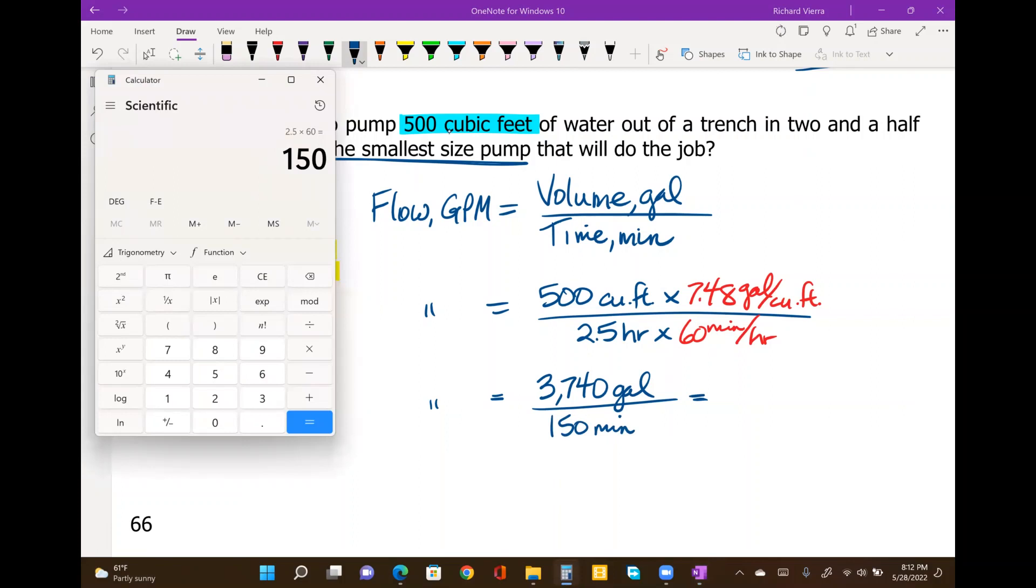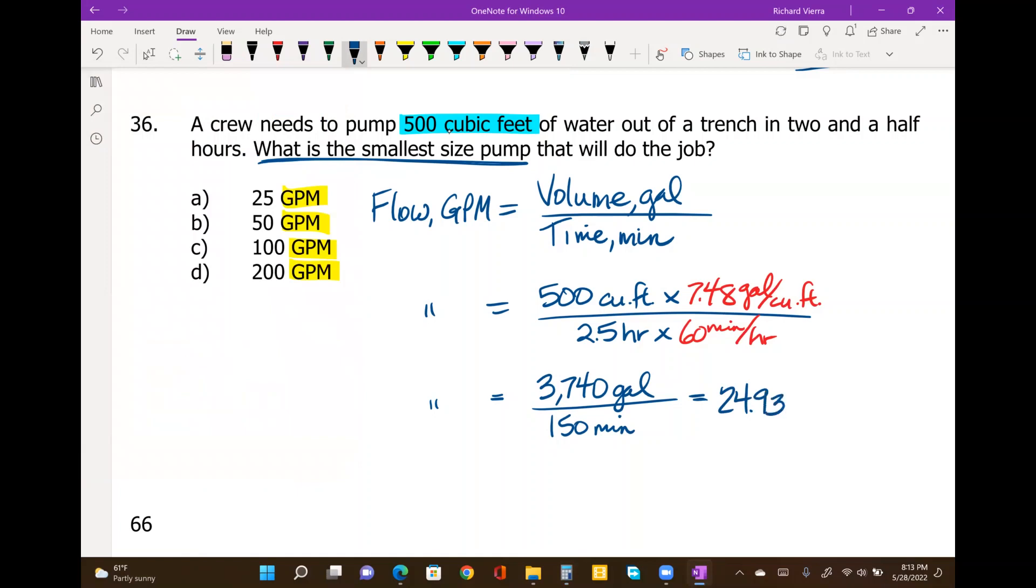So if we need to pump out 3,740 gallons in 150 minutes, we need a pump that's going to give us at least 24.93 gallons per minute. And that makes answer A the best choice.